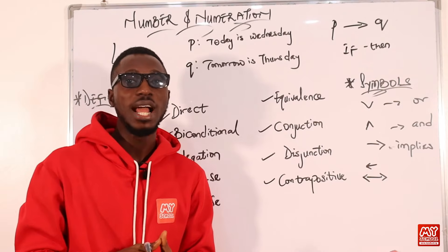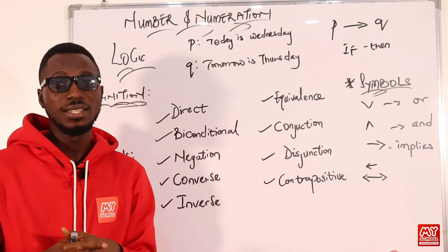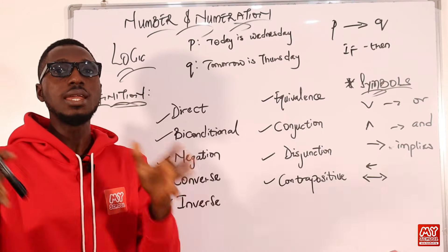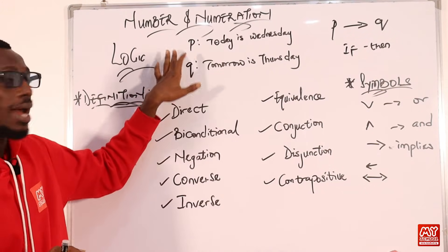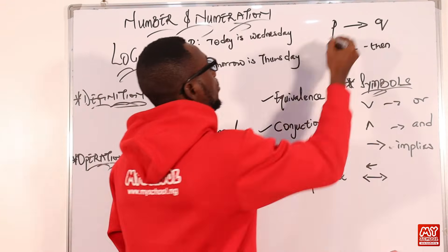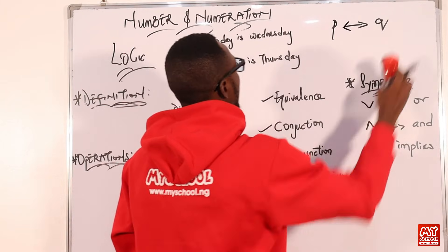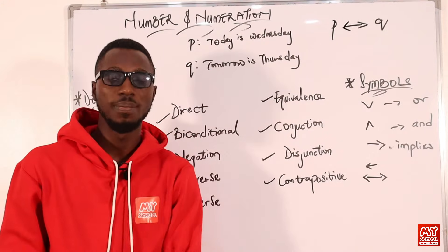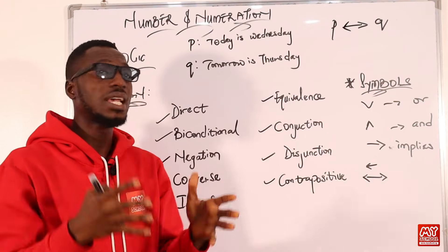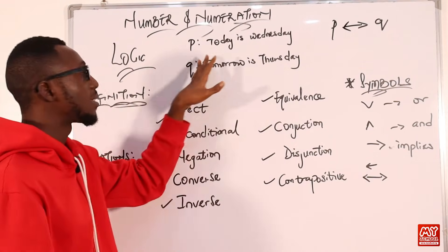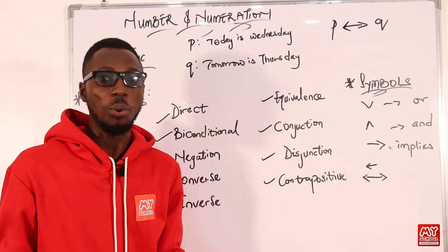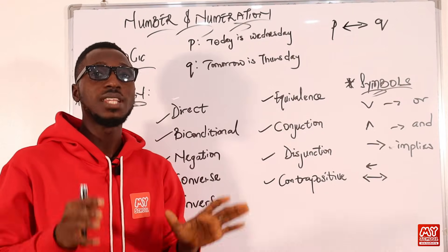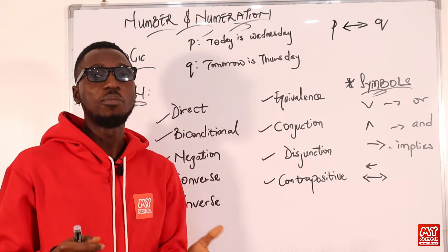We have the biconditional. Just like the name implies — bi means two — it involves two conditional statements being brought together. The symbol for biconditional means 'if and only if.' So if I want to use the biconditional expression with P and Q, that will be: today is Wednesday if and only if tomorrow is Thursday. So make sure we are using 'if and only if' to represent this expression.